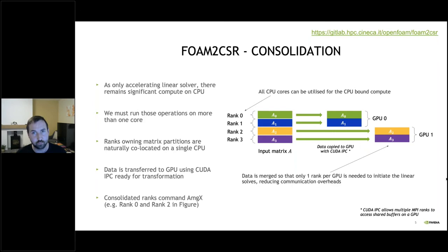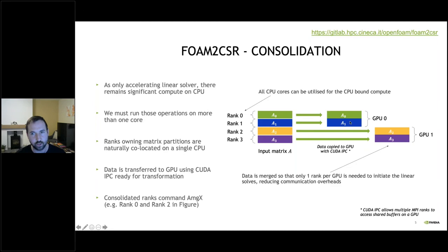We use a technology called CUDA IPC to do communication between MPI ranks, passing all data given by the CPU cores up to the GPU. If we had 32 cores and one GPU, we'd merge everything together; with multiple GPUs we spread the data out. You can see that we've consolidated the rows of the matrix that were originally split across two ranks onto one rank.